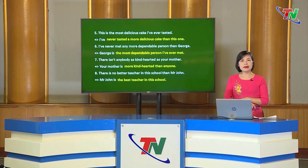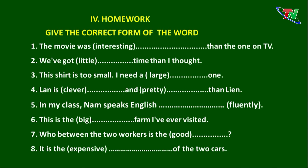Vậy là chúng ta vừa ôn lại các dạng bài tập của so sánh hơn, so sánh ngang bằng và so sánh hơn nhất của tính từ và trạng từ. Sau đây chúng ta sẽ chép bài tập về nhà: Give the correct form of the word: 1. The movie was interesting than the one on TV. 2. We forgot little time than I thought. 3. This shirt is too small, I need a large one. 4. Lan is clever and pretty than Liên. 5. In my class, Nam speaks English fluently. 6. This was the big farm I've ever visited. 7. Who between the two workers is the good? 8. It is the expensive of the two cars.